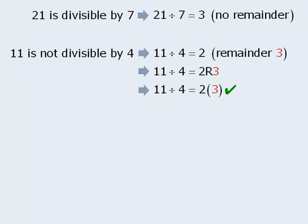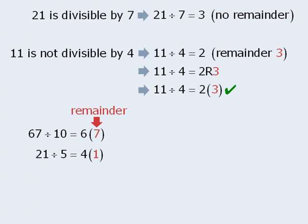Just to be sure that you fully understand this concept, let's look at a few more examples. When we divide 67 by 10, we get 6 with remainder 7. When we divide 21 by 5, we get 4 with remainder 1. And finally, when we divide 45 by 9, we get 5 with remainder 0. This by the way means that 45 is divisible by 9.